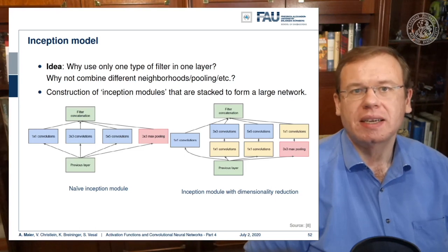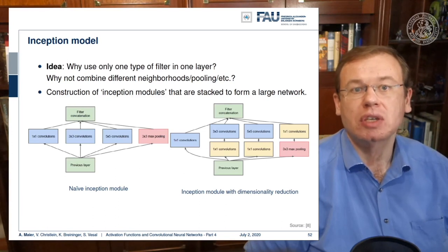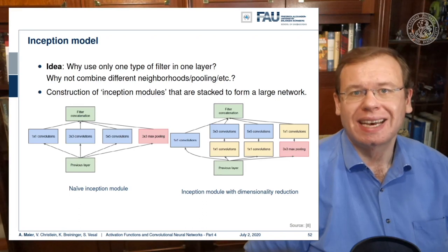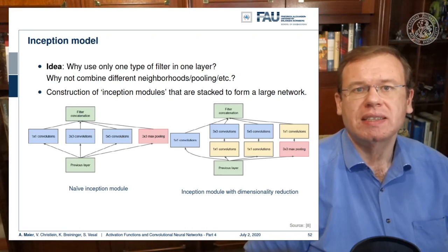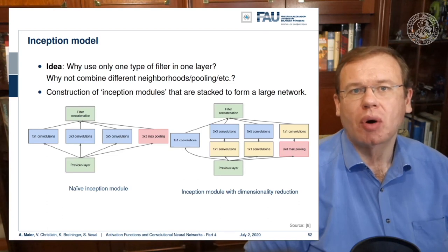So the main idea is that you put in parallel 1 by 1 convolution, 3 by 3 convolution, 5 by 5 convolution and max pooling. Then you just concatenate them. Now the interesting thing is that if you offer all those four operations in parallel that the next layer can then choose what input to trust most in order to construct the deep network.